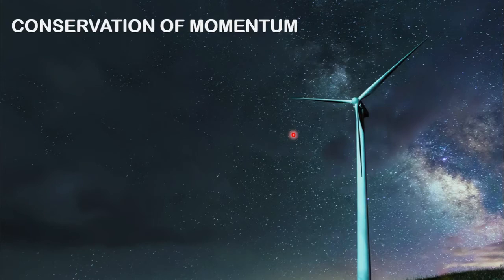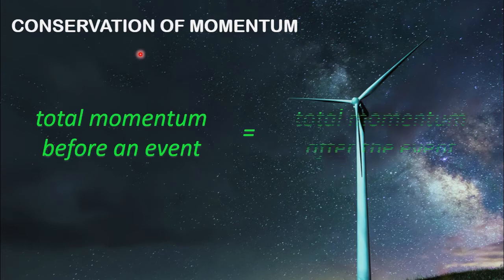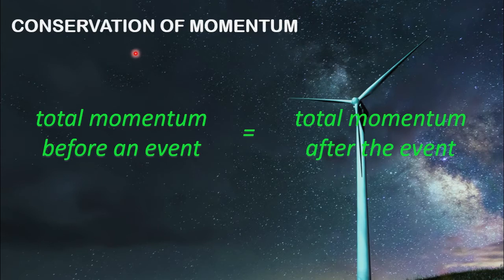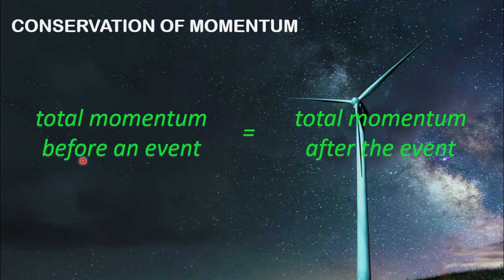We are now moving to the next part of the lesson: conservation of momentum. The law of conservation of momentum is one of the fundamental laws in physics. It states that in a closed system, the momentum remains constant. This obeys Newton's first law. A closed system means that no external forces are acting on the system. In calculation, the conservation of momentum can be written as: total momentum before an event or collision equals total momentum after the event.